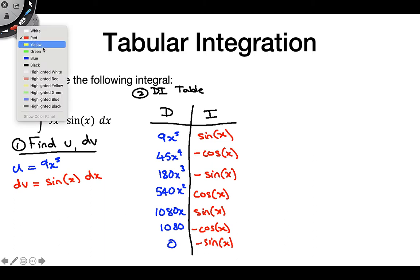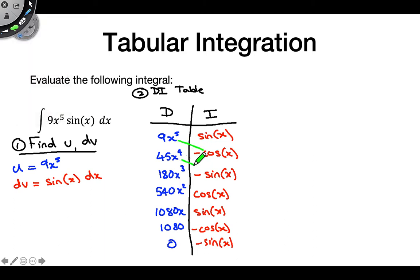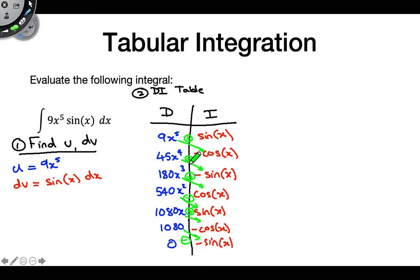The next step is to draw diagonal lines connecting the terms across — one down in the adjacent column. When we do this, we assign an alternating sign: the first one gets a positive sign, the next a negative sign, then positive again, then negative, and so on. This is basically a manifestation of the uv step in the uv minus v du formula — we're multiplying these things, and the sign accounts for how many repeated integration by parts steps we're doing. We're still doing integration by parts; we're just streamlining it.